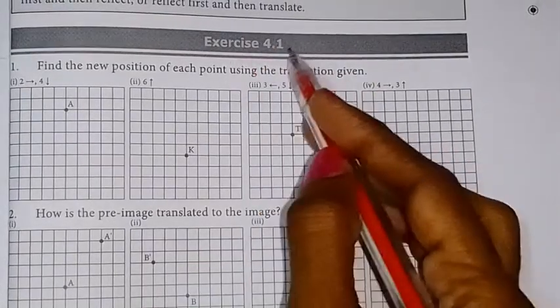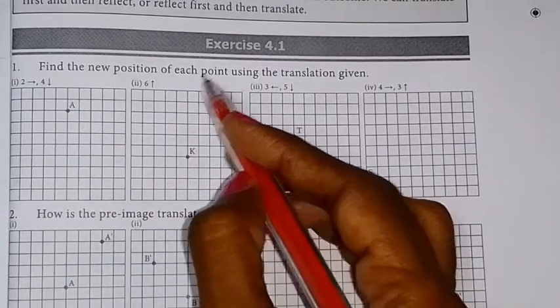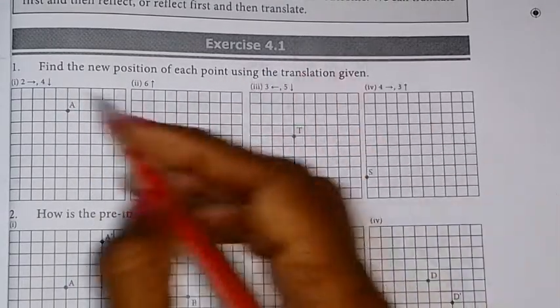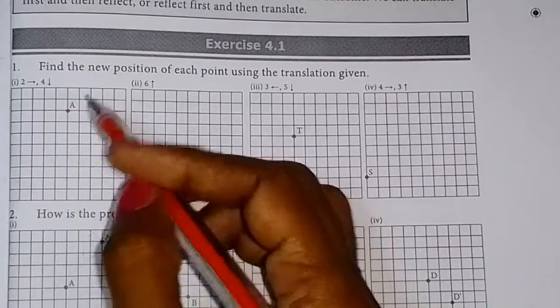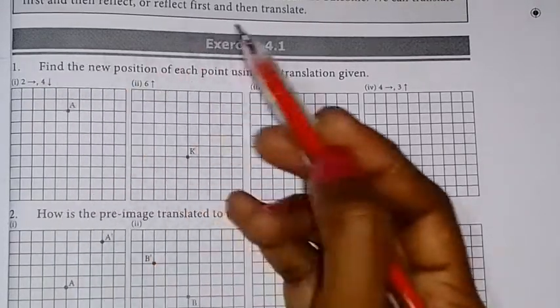Hello Children! I am going to talk about Sum No.1. Find the new position of each point using the translation given. So, if you get a point, if you translate it, it will be a new position.